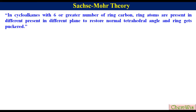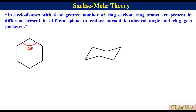For example, in the planar form of cyclohexane as proposed by Baeyer, the interior CCC bond angle is 120 degrees, which is 10.5 degrees higher than the normal tetrahedral bond angle. But in the puckered chair form of cyclohexane, the interior bond angle is around 109 degrees, which is very close to the ideal tetrahedral bond angle, and due to this the cyclohexane ring is strain-free.